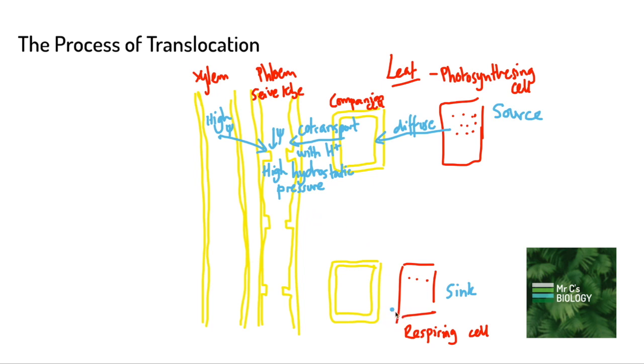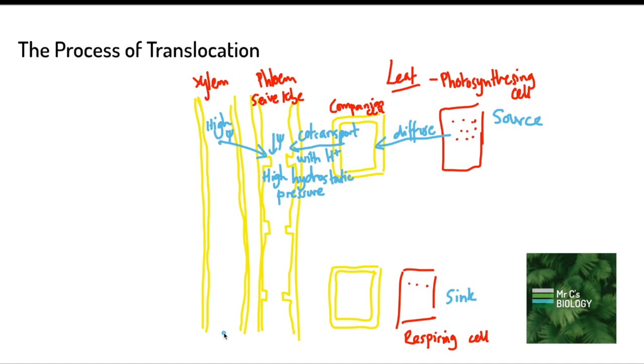Now let's flip back to the sink and think about what's happening here. We have this respiring cell that is using up sucrose in respiration, or it might be storing sucrose as starch somewhere else in the plant. Because we're using up the sucrose there, it's wanting to get more sucrose into the cell, and that happens by active transport. Sucrose is actively transported out of the phloem sieve tubes into where it's needed.